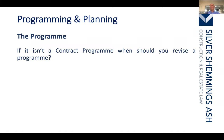The second circumstance when you should revise a program is when you're in front of program. I've seen many contracts managers three weeks ahead of program thinking how clever they are — but if you are three weeks in front of program and are subsequently delayed by three weeks and claim an extension, the argument comes back: 'there's no delay to completion.' Under the JCT, if you're three weeks in front of program and there is a three-week delaying event, your entitlement is zero. So where you're in front of program, revise it to show yourself back on time.